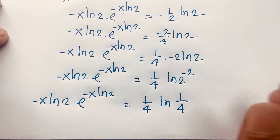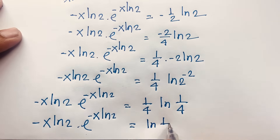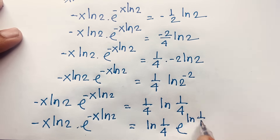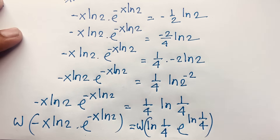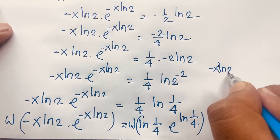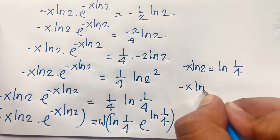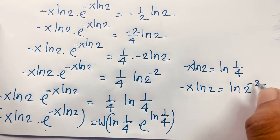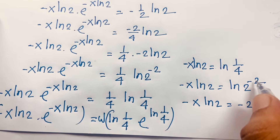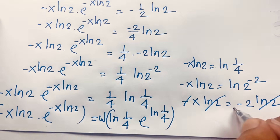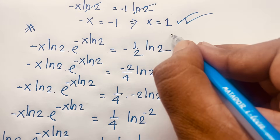Rewriting 1/4 as e to the power ln(1/4), and applying Lambert W to both sides, we get: negative x ln 2 equals ln(1/4), which equals ln(2 to the power negative 2) equals negative 2 ln 2. Dividing both sides by ln 2 and cancelling the minus sign gives x equals 2. This is our second solution.